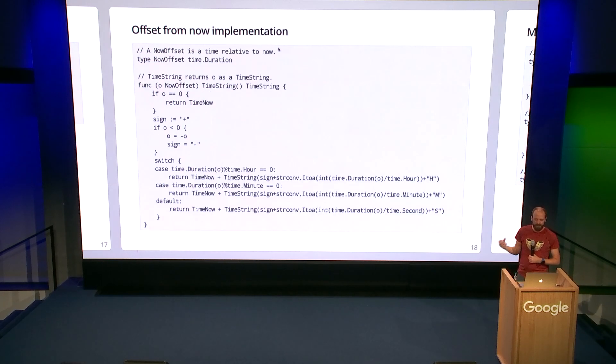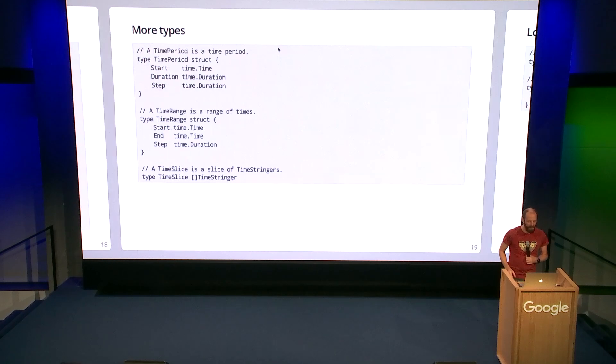Of course, we can get more sophisticated than this. This is a now plus some time where we get a duration as our basic offset. And now there's a bit more logic to work out is it an even number of hours or minutes or seconds from now. All of these things implement the time stringer interface. In fact, we've got a whole range of types now that implement this and these are all written using normal Go types.